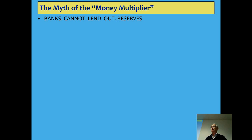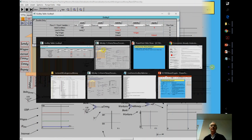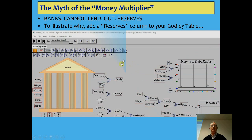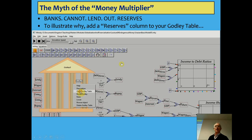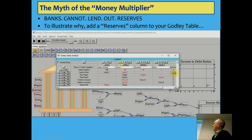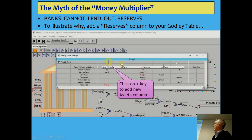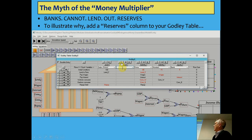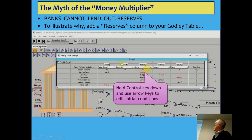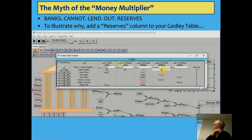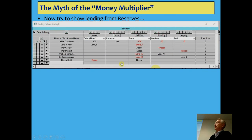Banks cannot lend out reserves, and I want to show you in an accounting sense why that's true. Let's add a reserve — I'll go back to the model and show it here. I've got a faster machine at home than this one, so we're just expanding this out so you can see the operation. Adding a new column, typing in reserves, giving a value to it — I've distributed this between the firm sector and the workers. That's all consistent. Now try to show lending from reserves. This is where the accounting convention has been incredibly useful, and why economists need to learn some accounting.